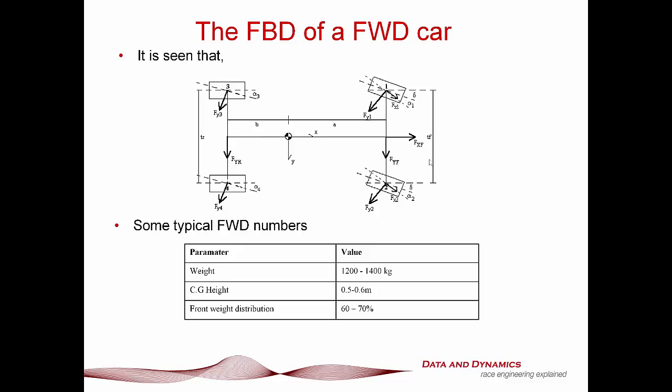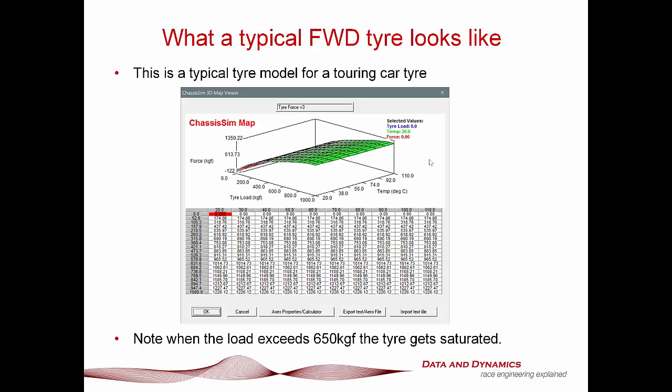The weight is in the order of 1,200 to 1,400 kilos. The CG height is typically between 0.5 to 0.6 metres. The front weight distribution is between 60 to 70%. Also worth remembering: for a typical touring car racing tyre, if you're getting to a load of about 650 kilograms force, you're pretty much reaching a law of diminishing returns. The tyre isn't saturated at that point, but it's getting pretty close.